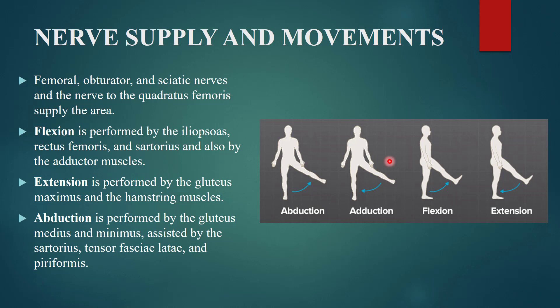Movements at the hip joint: flexion is performed by the iliopsoas, rectus femoris, sartorius, and adductor muscles of the anterior and medial compartments. Extension — bringing the thigh backward — is performed by gluteus maximus and the hamstring muscles: semitendinosus, semimembranosus, and biceps femoris.